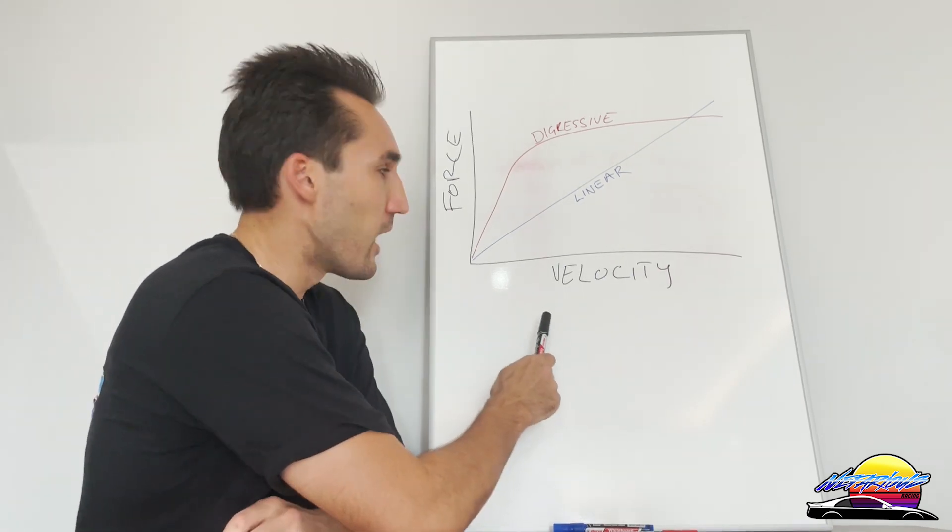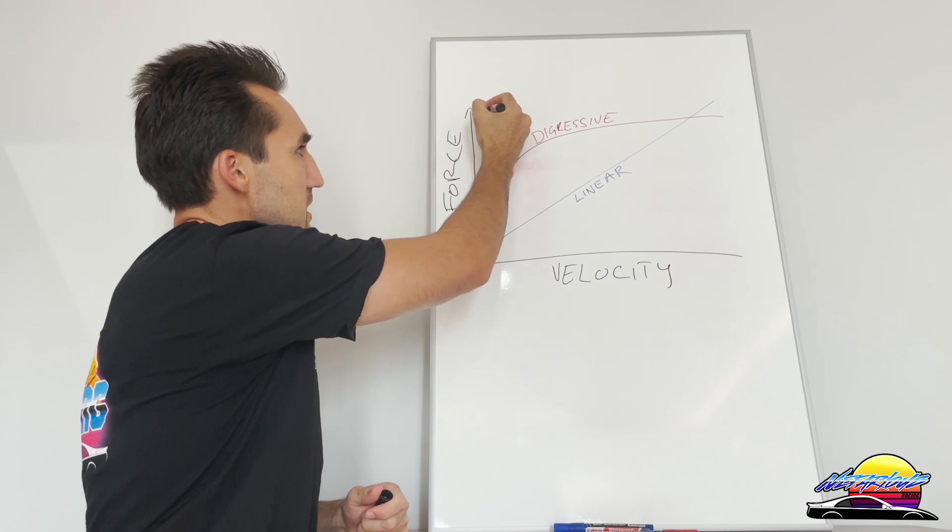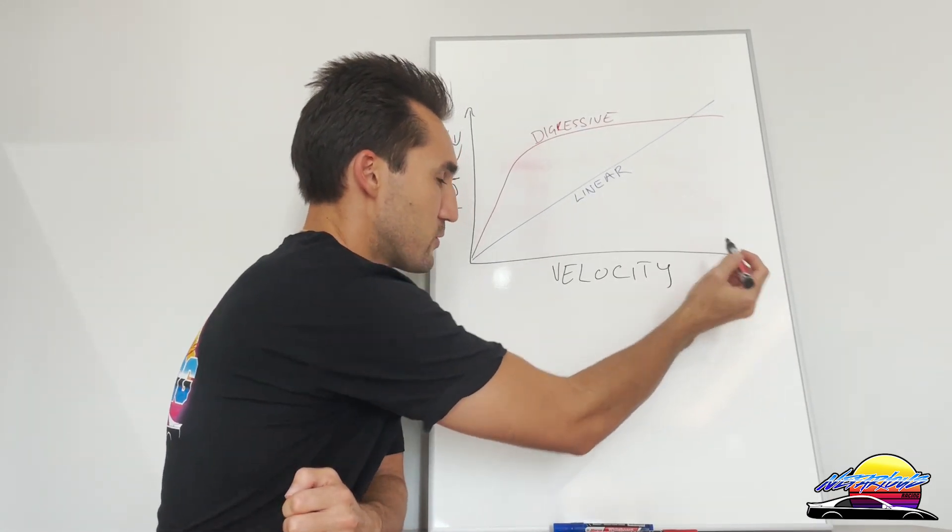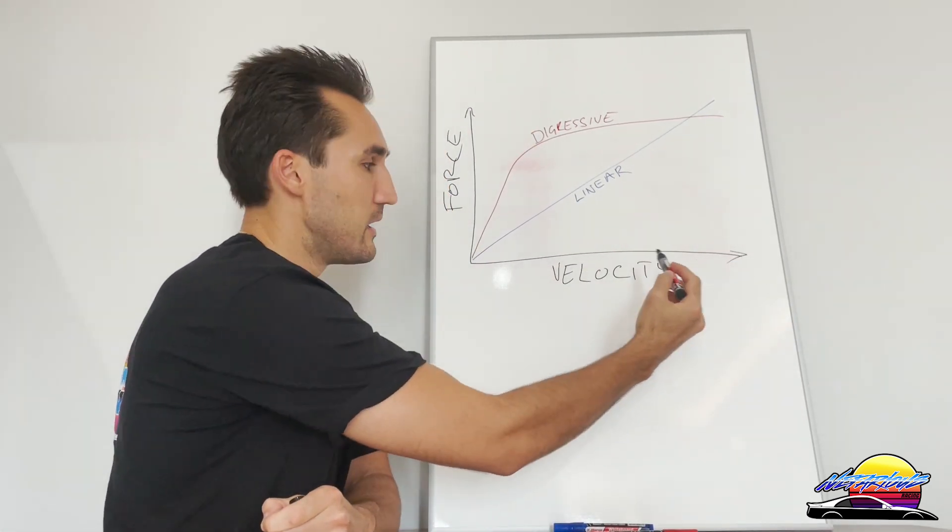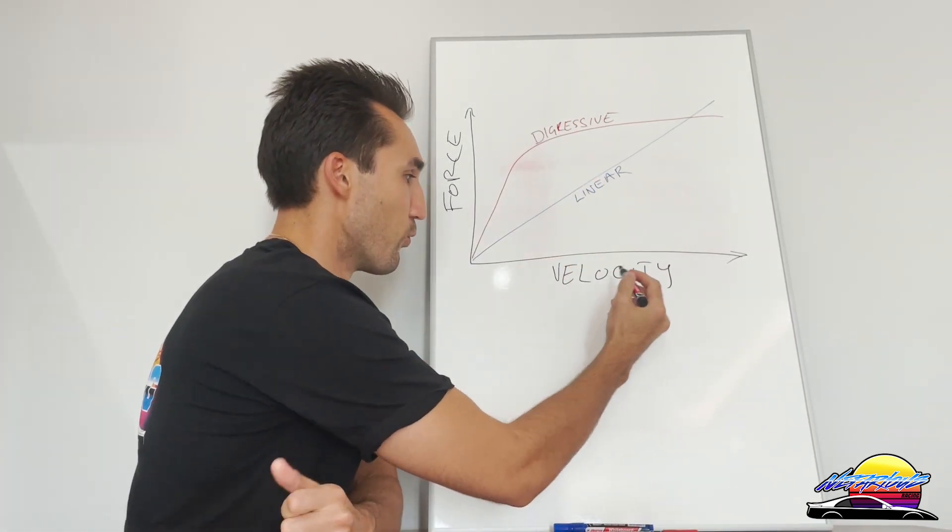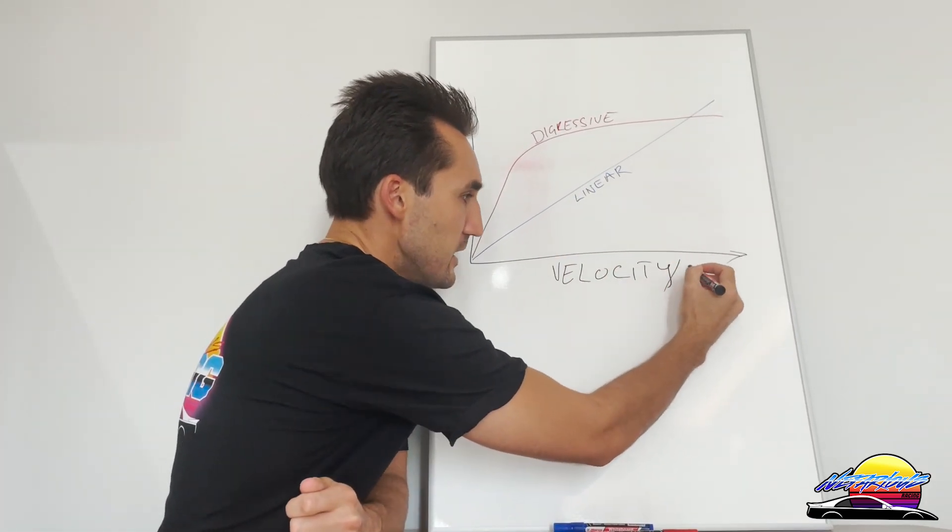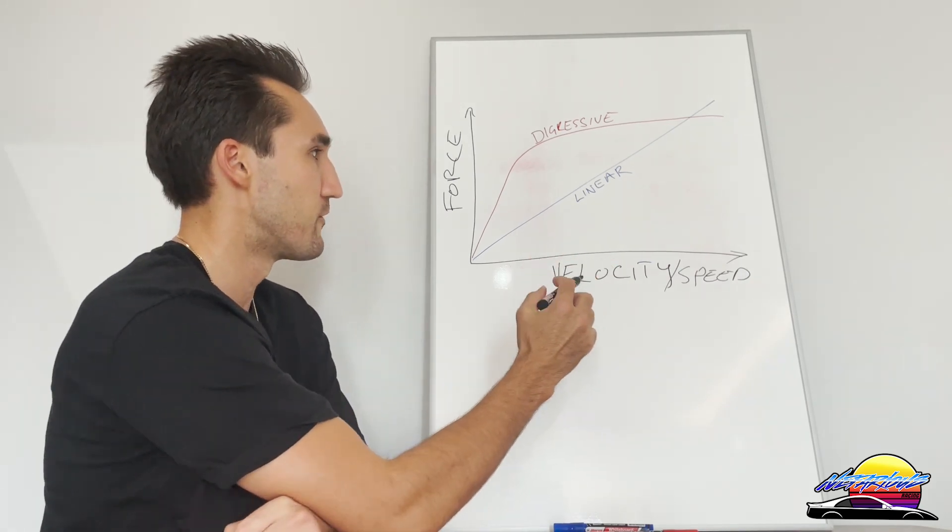What you're looking at here on this graph is the damping graph of the two different types of dampers. This is the force axis, meaning how much damping force is applied, and this is the velocity axis, which means how much force is applied at what velocity of the damper piston itself. This could also be said as speed, but we're not talking about vehicle speed—we're talking about the speed of the piston of the damper moving, and that makes a big difference.